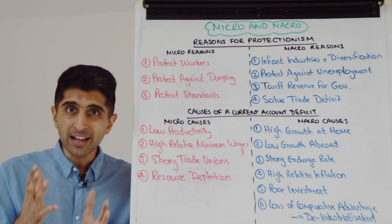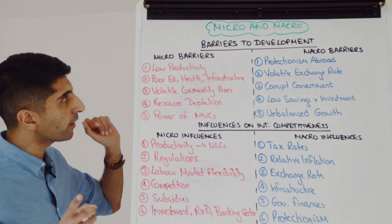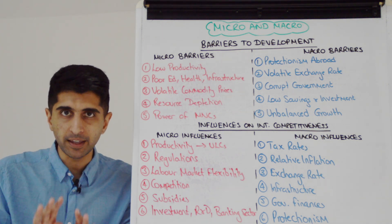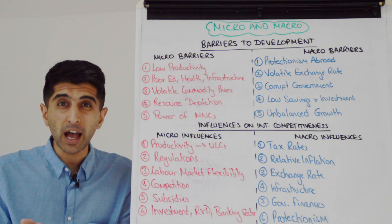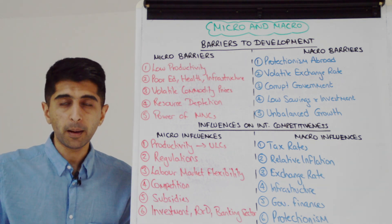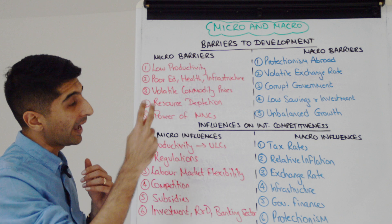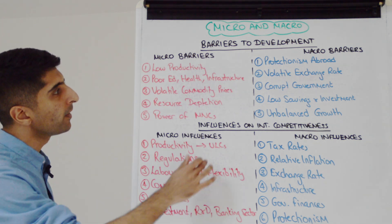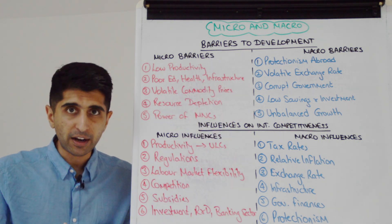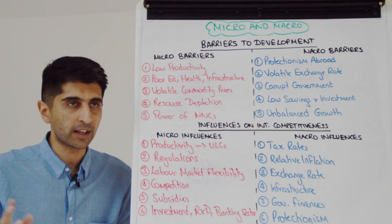Let's look at micro and macro barriers to development. Micro barriers first: low productivity is a massive issue in developing countries — it keeps incomes low, leads to a vicious poverty cycle, and keeps costs high for firms so they're not very competitive internationally. Poor education and health — perhaps because low incomes prevent access, or due to market failure and lack of government funding — again keeps productivity and incomes low. Poor infrastructure, a public good requiring government funding: without it, FDI is deterred, competitiveness falls, and access to hospitals, schools, and jobs is reduced.